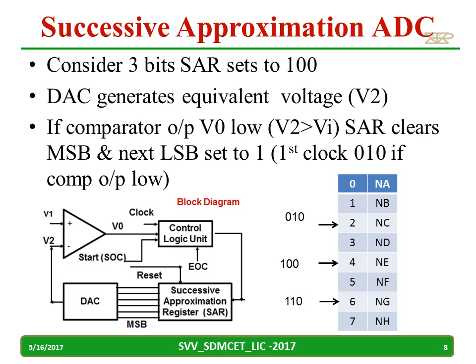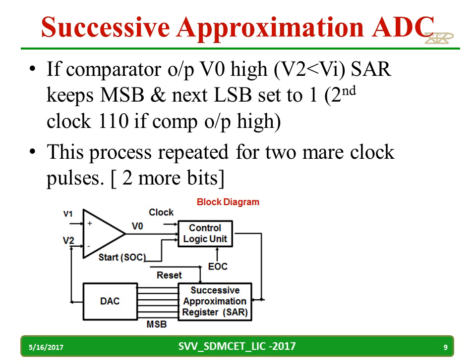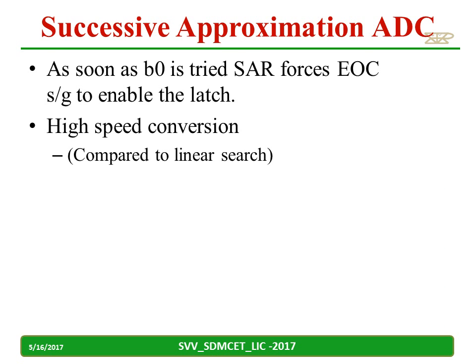So from 1 0 0 the output either switches to 0 1 0 or 1 1 0. If the comparator output is high, SAR keeps the MSB as it is and sets the next LSB to one — so 1 0 0 becomes 1 1 0. This process is repeated for each clock pulse until all bits are decided. The speed is high compared to linear search, and this repeats up to the last bit B0.